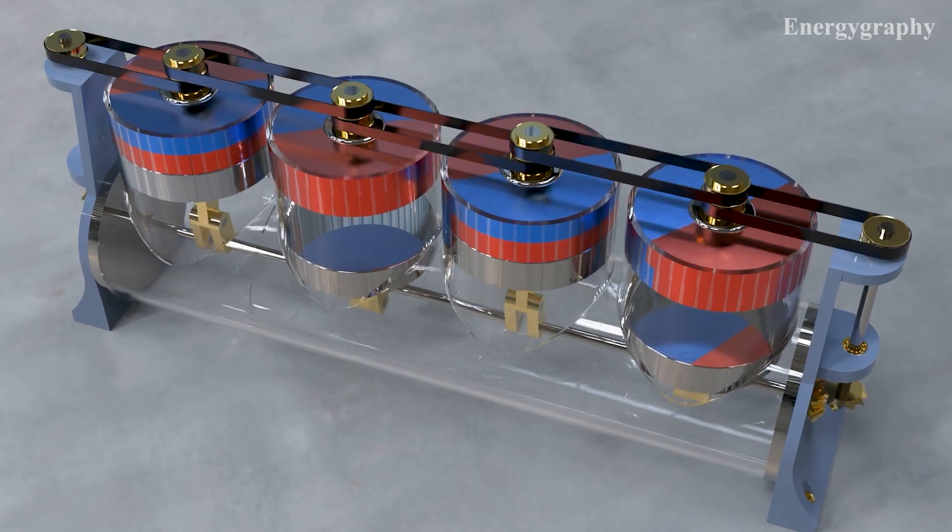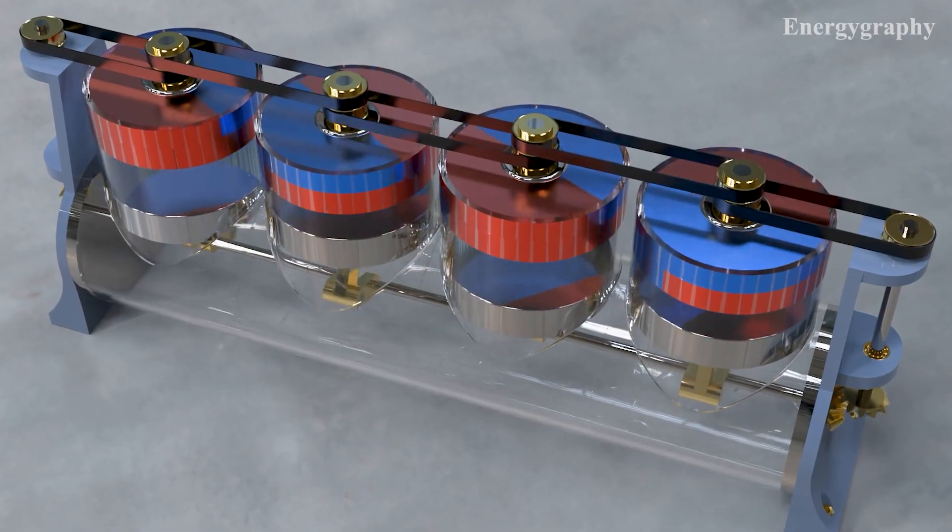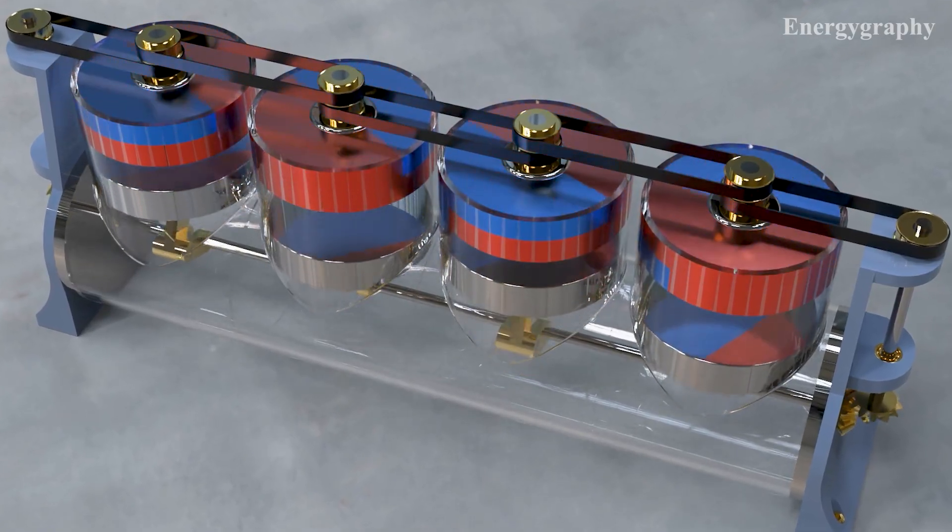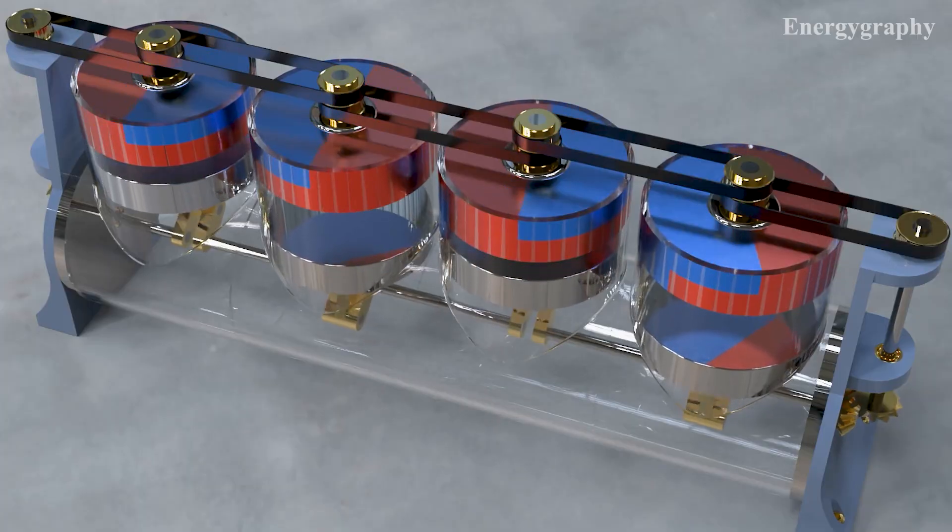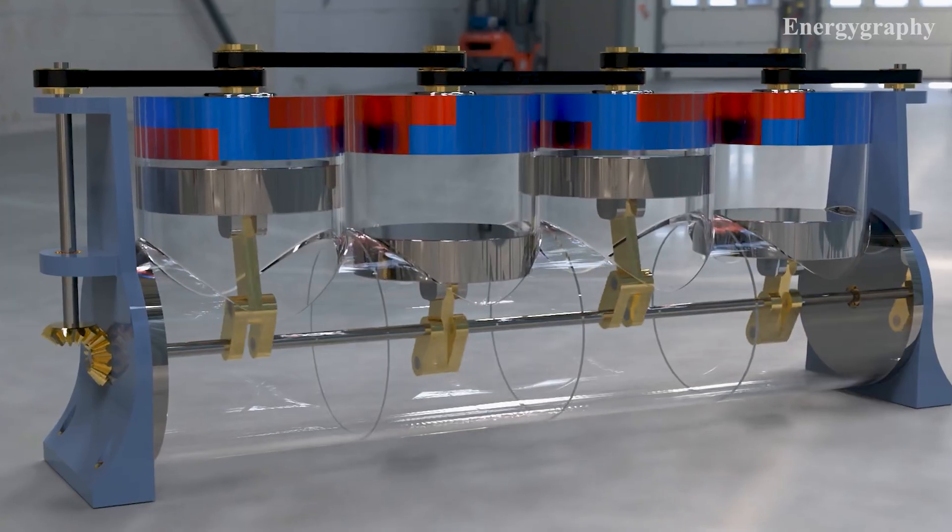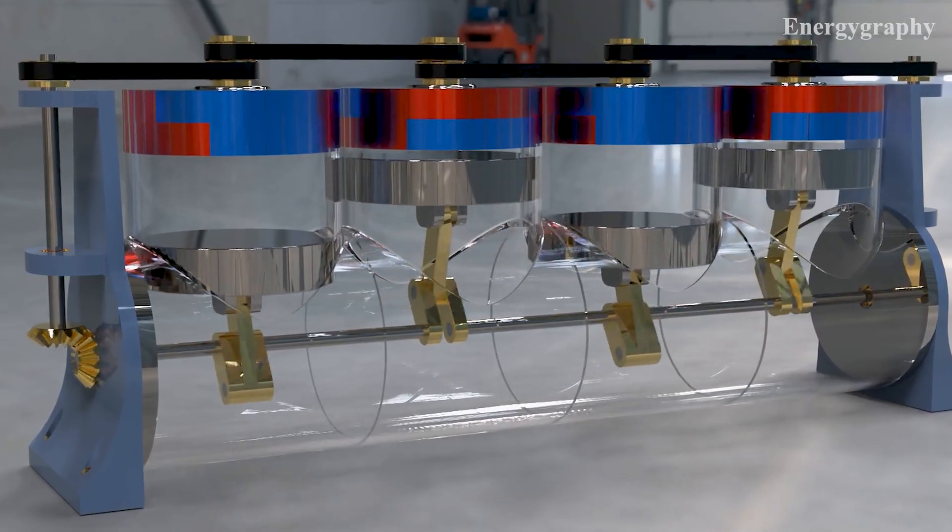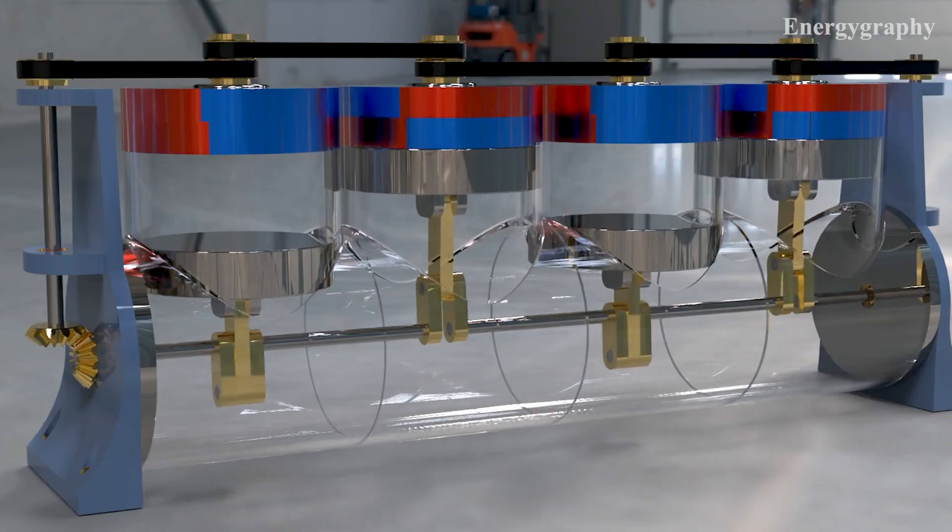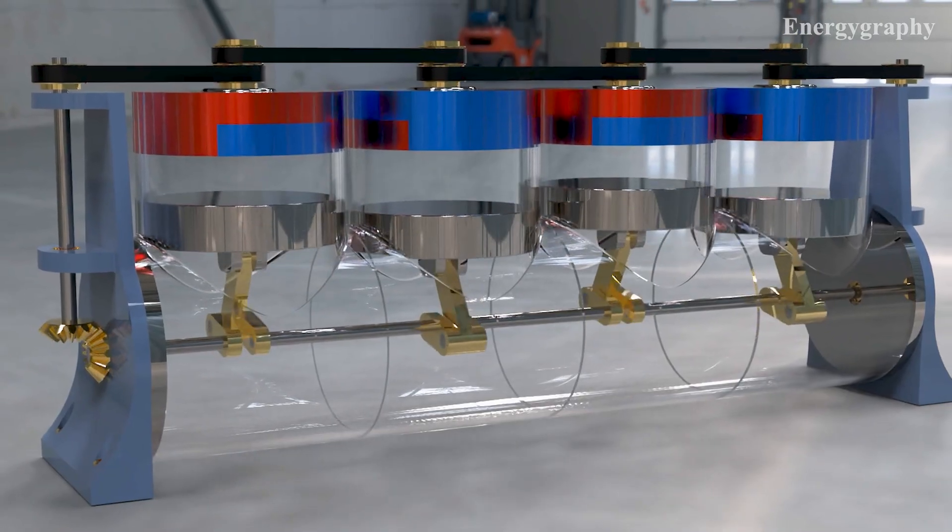The rotating magnets rotate regularly and are activated and deactivated at the right time. In each cylinder, when the piston is at top center, the magnet is deactivated and the piston moves down.